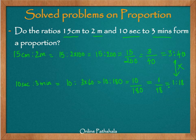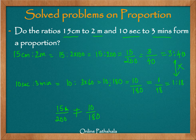We can clearly see that these two simplest forms are not equal: 3 is to 40 is not equal to 1 is to 18. Therefore the ratios 15 is to 200 and 10 is to 180 are not in proportion. We converted both quantities to the same units, computed each ratio, found their simplest forms, and upon finding them unequal, concluded that these ratios are not in proportion.